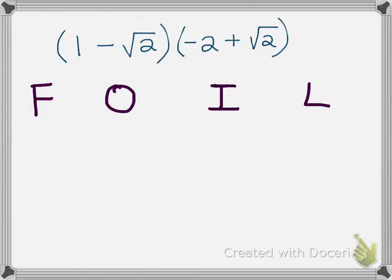Alright, look at this first example. I'm going to show you guys how to multiply both of these binomials using the FOIL method. FOIL represents first, outer, inner, last.